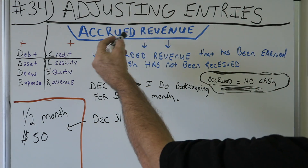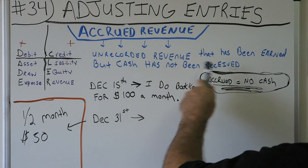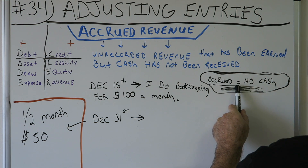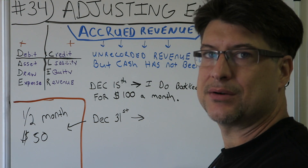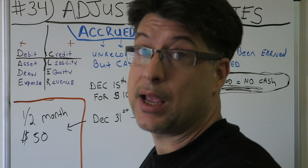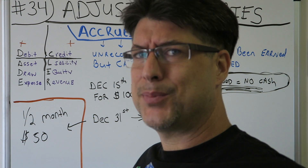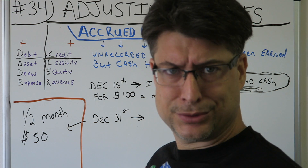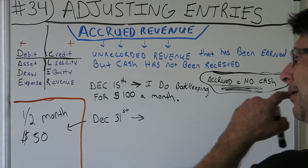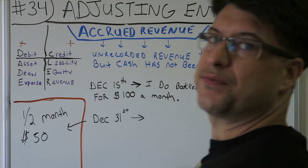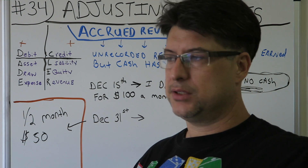Alright, enough talking. Accrued revenue: unrecorded revenue that has been earned. I did work, cash not received. Accrued equals no cash — write that on your paper. I did the work and didn't get my money — how am I going to take my girl to Applebee's two-for-twenty? December 15th I meet with a client, they say I'll do monthly bookkeeping for you for $100. Great!